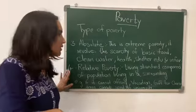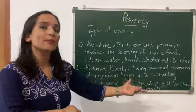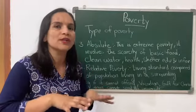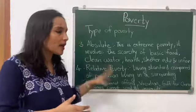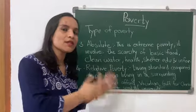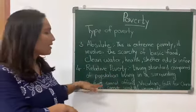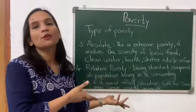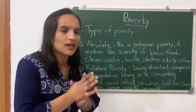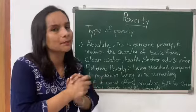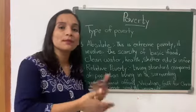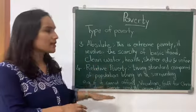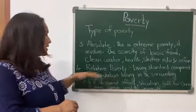The fourth one is relative poverty. This refers to the living standard compared to the population living in the surrounding area. People consider themselves in poverty even if they are not able to afford a vacation for their family, purchase a gift for Christmas or a festival, or send their children to university for higher education. This kind of poverty is called relative poverty.